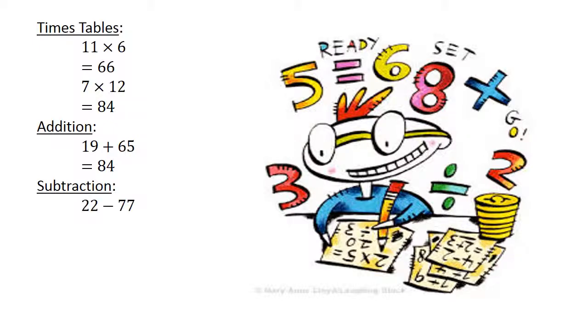Subtraction. 22 minus 77 equals negative 55. Division: 56 divided by 7 equals 8.